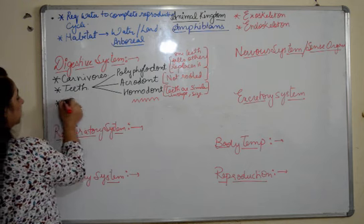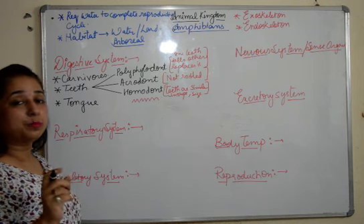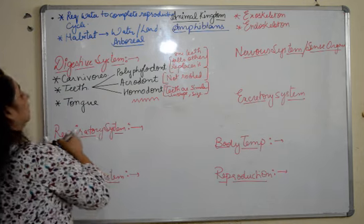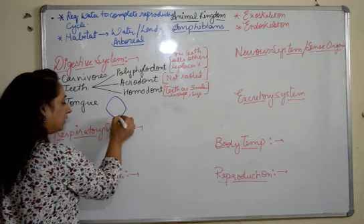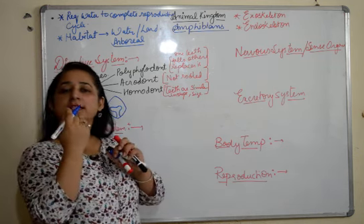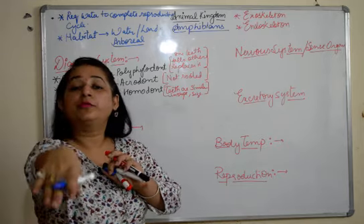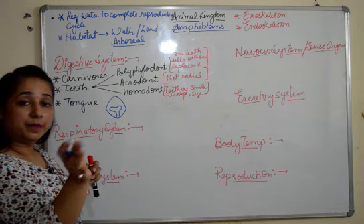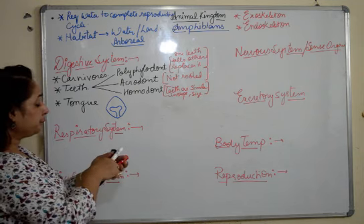Talking about the next part of the digestive system — the tongue. The tongue plays an important role because it is responsible for catching prey. The tongue is attached at the anterior part of the mouth, so as and when prey is there, it is protruded out. It comes out to catch the prey and then moves back inside with the prey. This is a very unique kind of tongue present in amphibians.